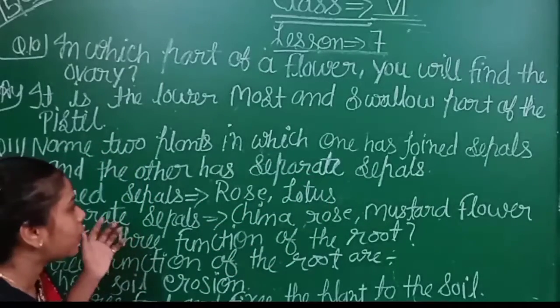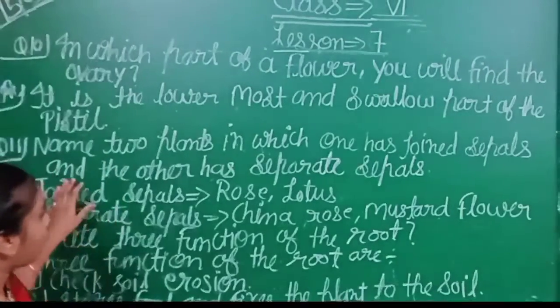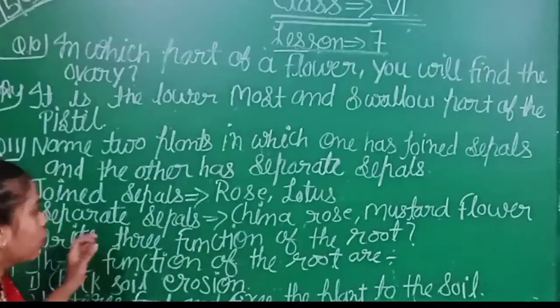The other has separate petals about the point. Two plants, one has joined petals and the other has separate petals.